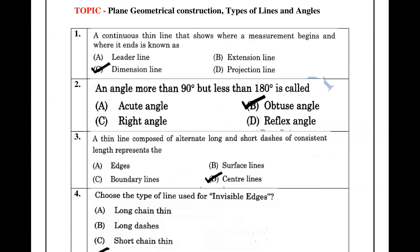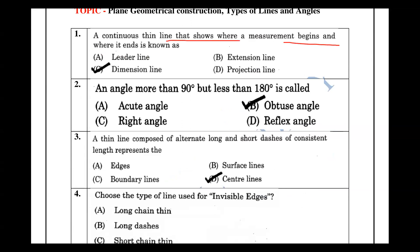The first question is about the continuous thin line — where the measurement begins and where it ends. In a dimension, we have a continuous thin line. The line used in this dimension is called a projection line, also known as an extension line.